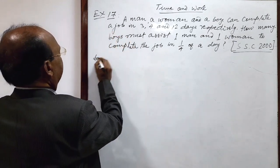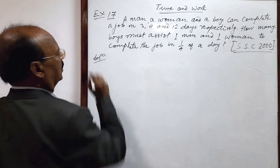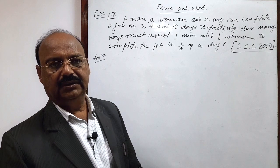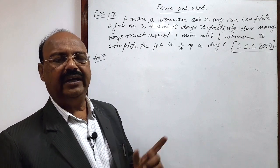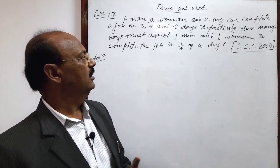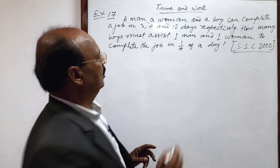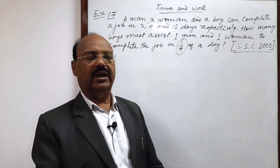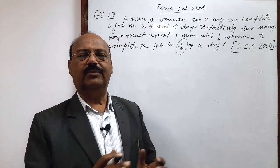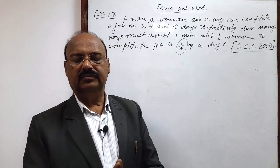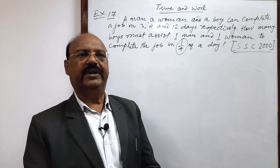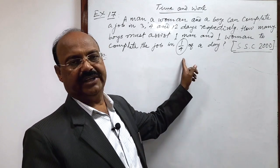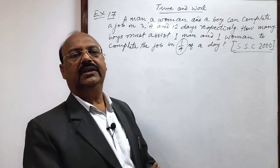Solution is very simple. First of all, we will calculate the amount of work done by one man and one woman in 1 by 4 of a day. Then second step, we will calculate how much amount of the work is remaining, is left, which will be completed by boys in the same period of time, 1 by 4 of a day.